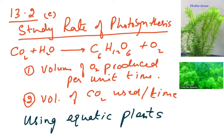This is the third video in the series on the chapter on photosynthesis. We are going to discuss syllabus point 13.2e, which says: carry out investigations on the effects of light intensity, carbon dioxide, and temperature on the rate of photosynthesis. Rate is always something to do with time — you cannot disassociate rate and time.